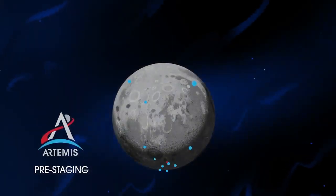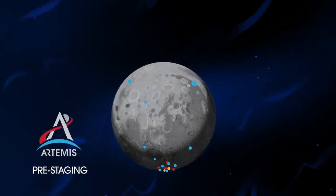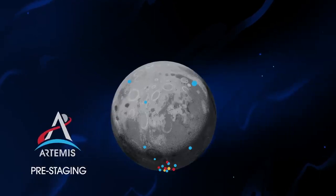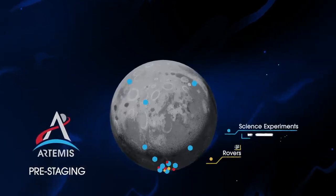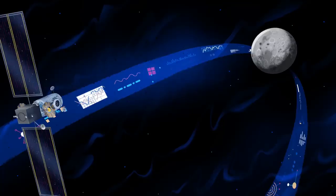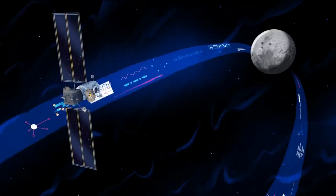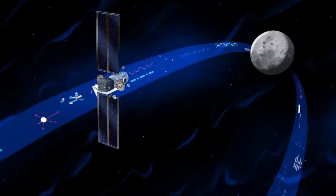Everything needed for lunar missions will be positioned in advance by commercial and international partners. This includes rovers, science experiments, and human-rated systems on the surface. But it also includes a dedicated lunar station in orbit around the Moon called Gateway.